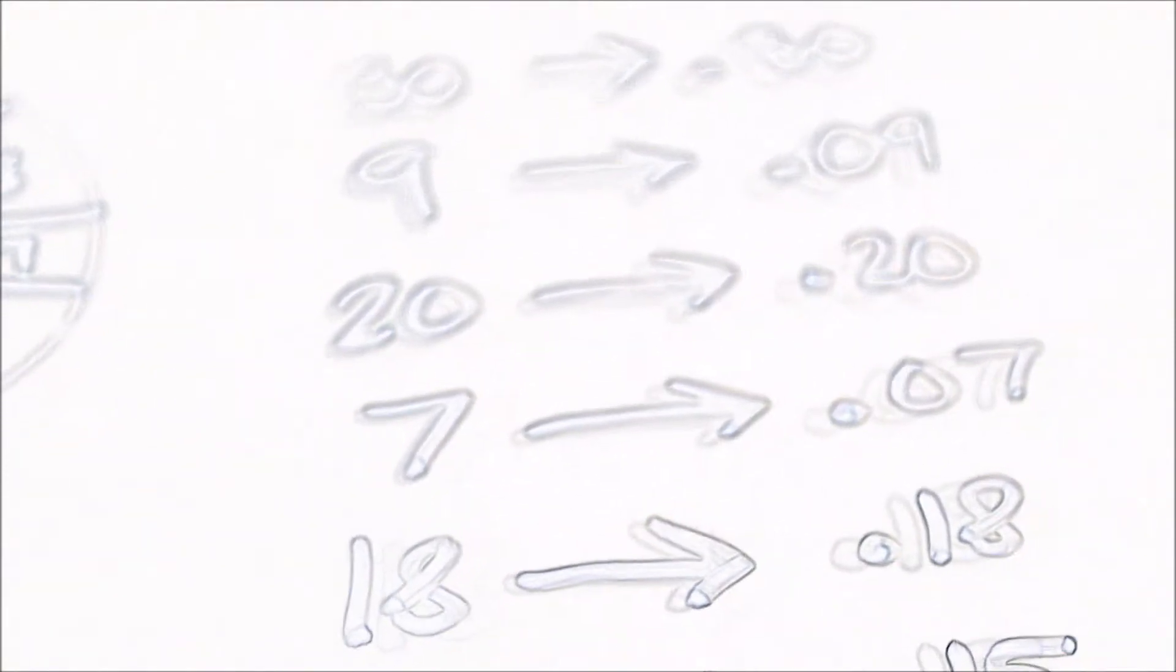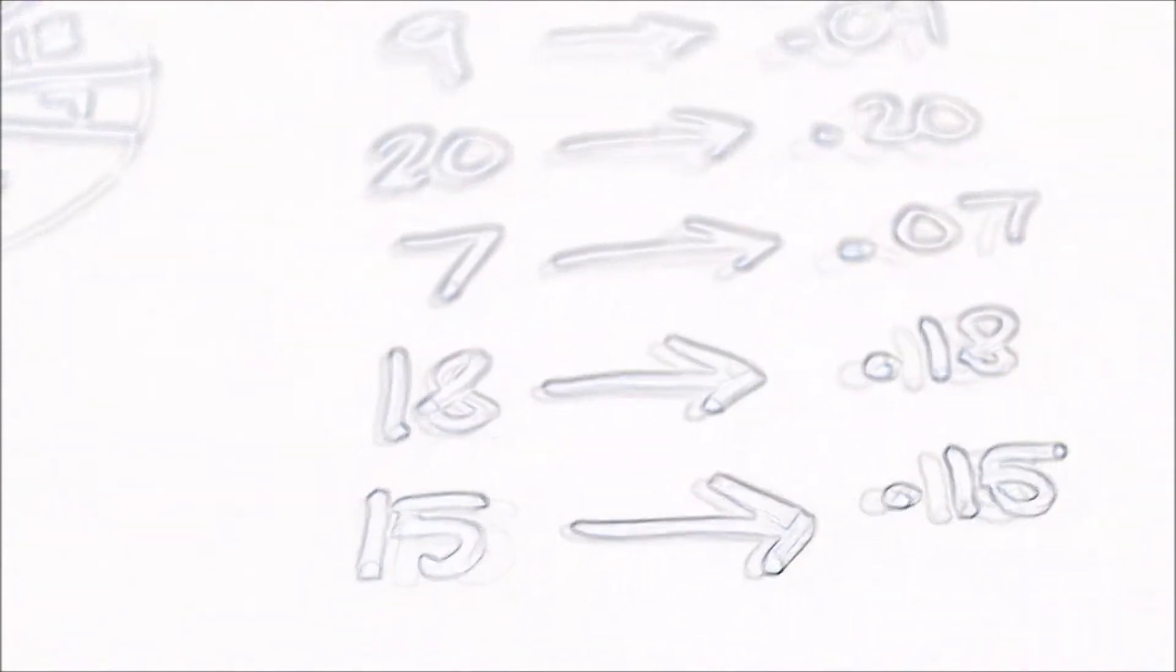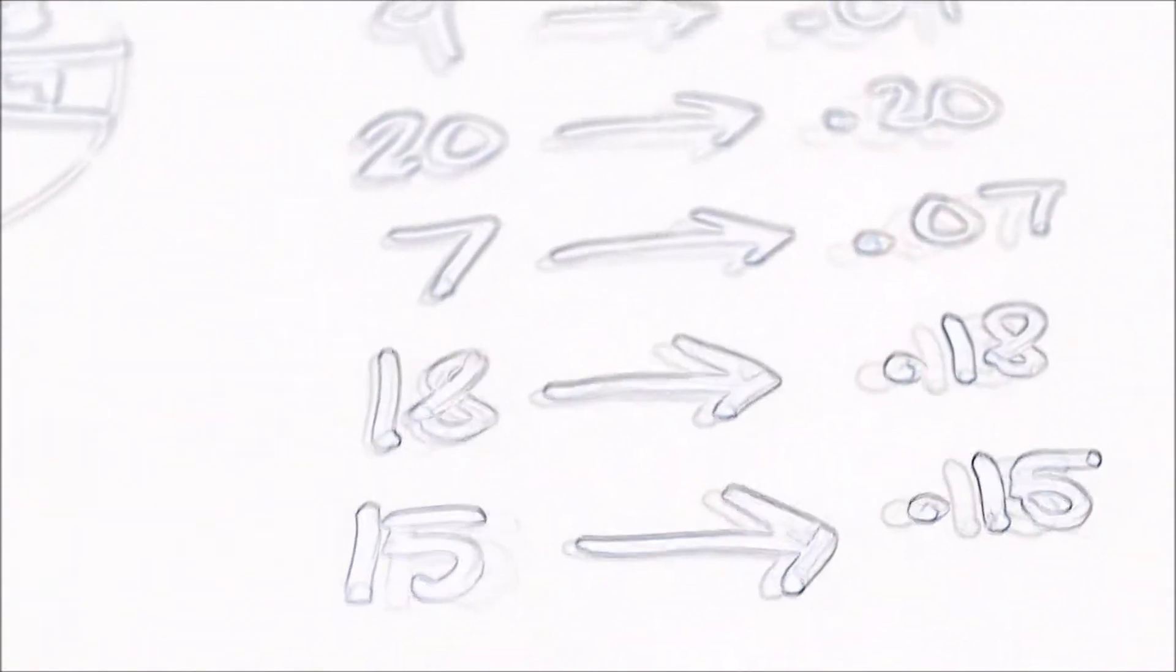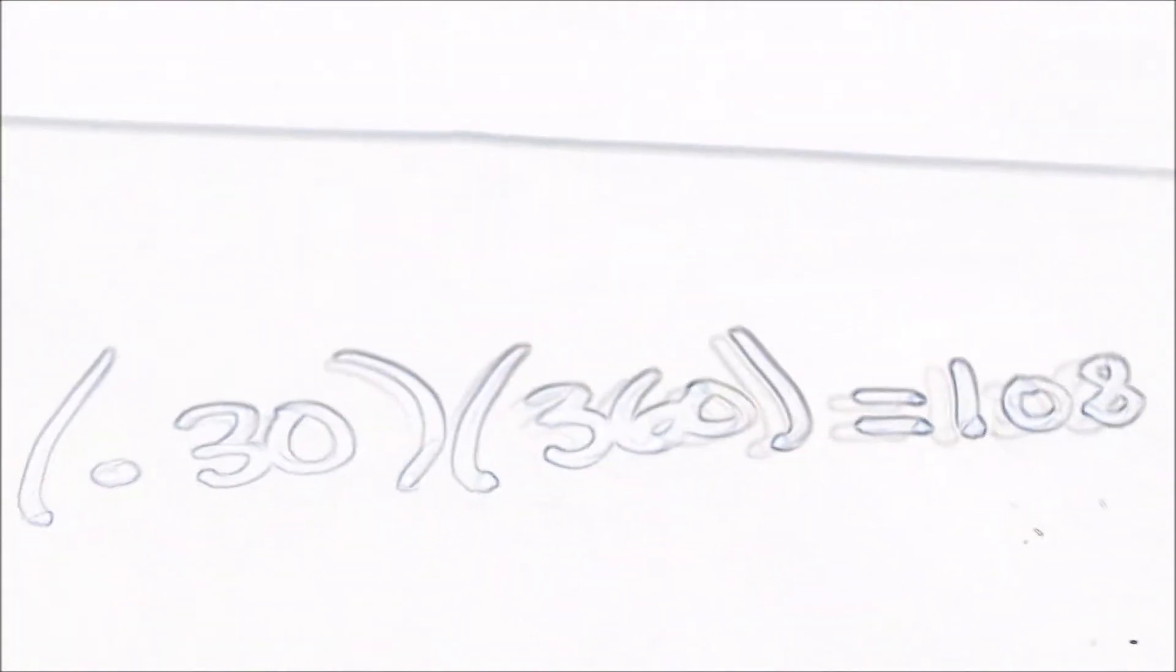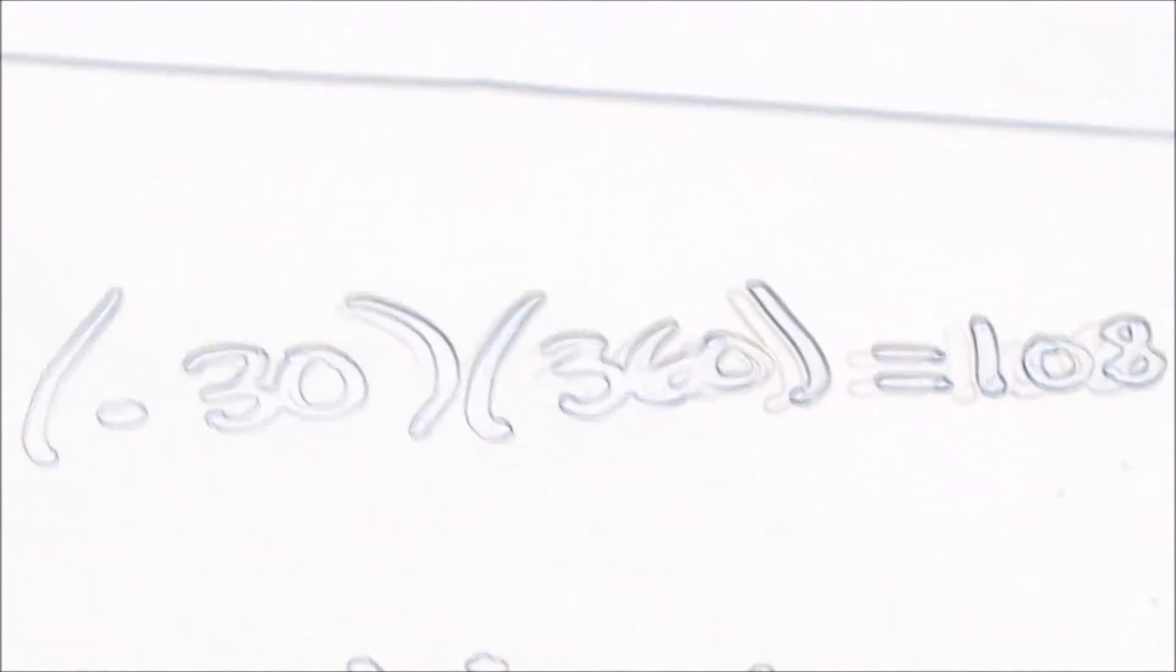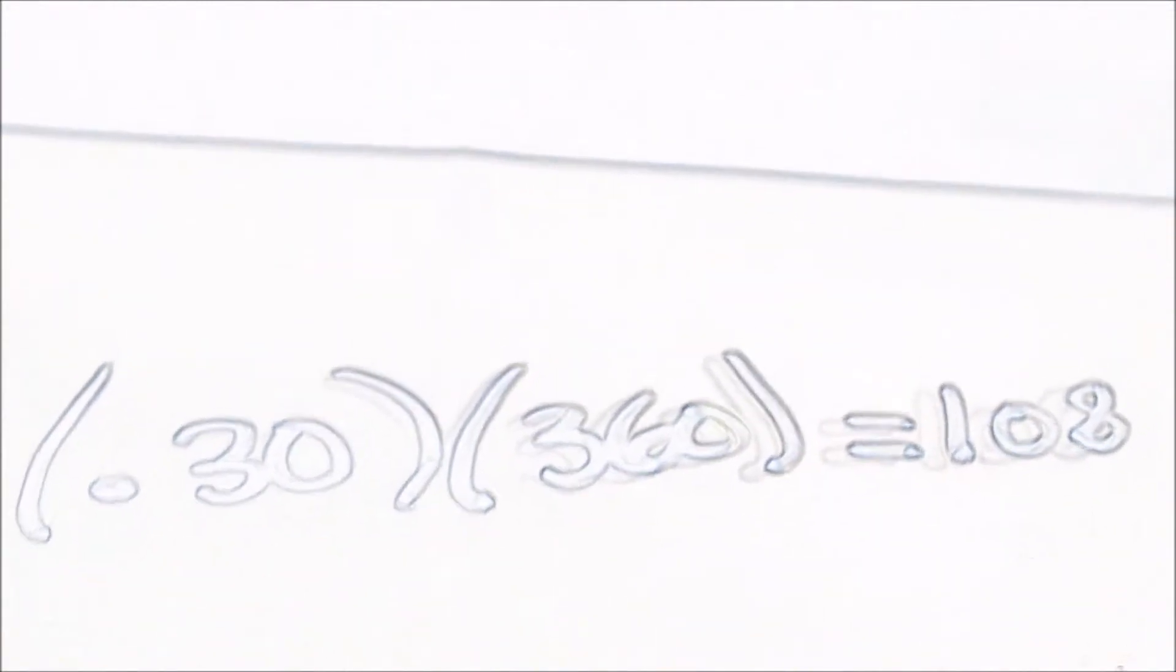20 into .20, 7 into .07, 18 into .18, 15 into .15. After you turn it into a decimal, you multiply it by 360 because the whole circle is equal to 360.